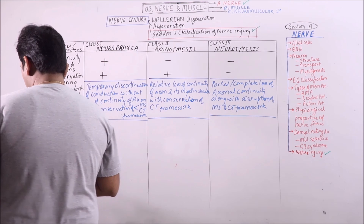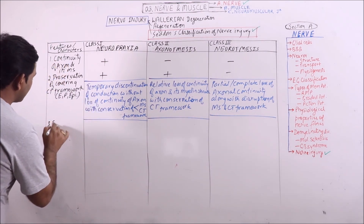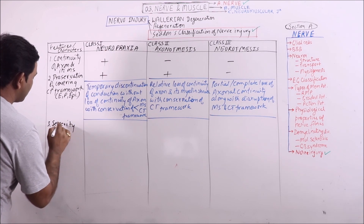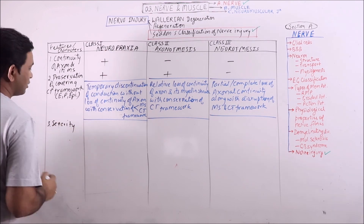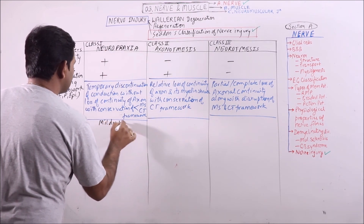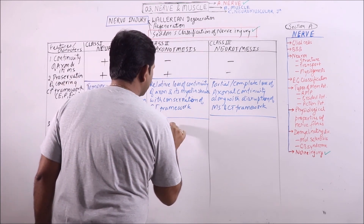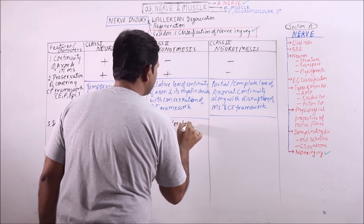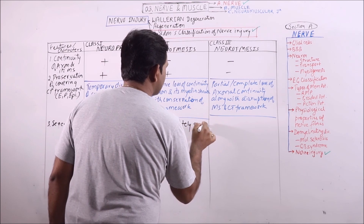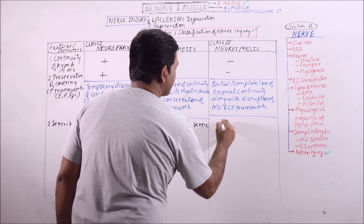If we discuss the severity, then neuropraxia is the mildest, axonotmesis is moderate, and neurotmesis ranges from moderately severe to the most severe condition.